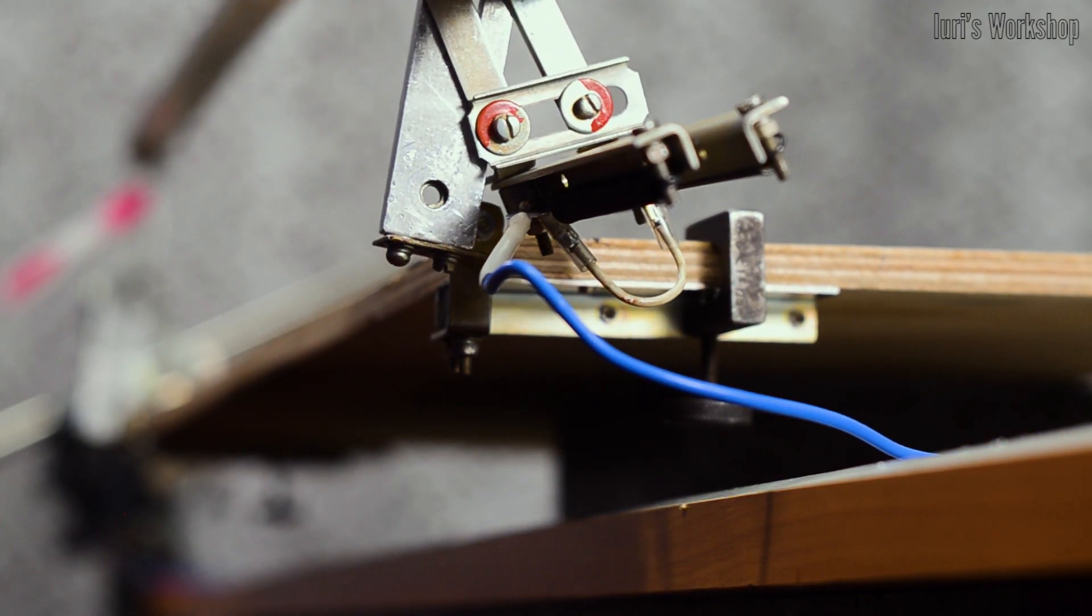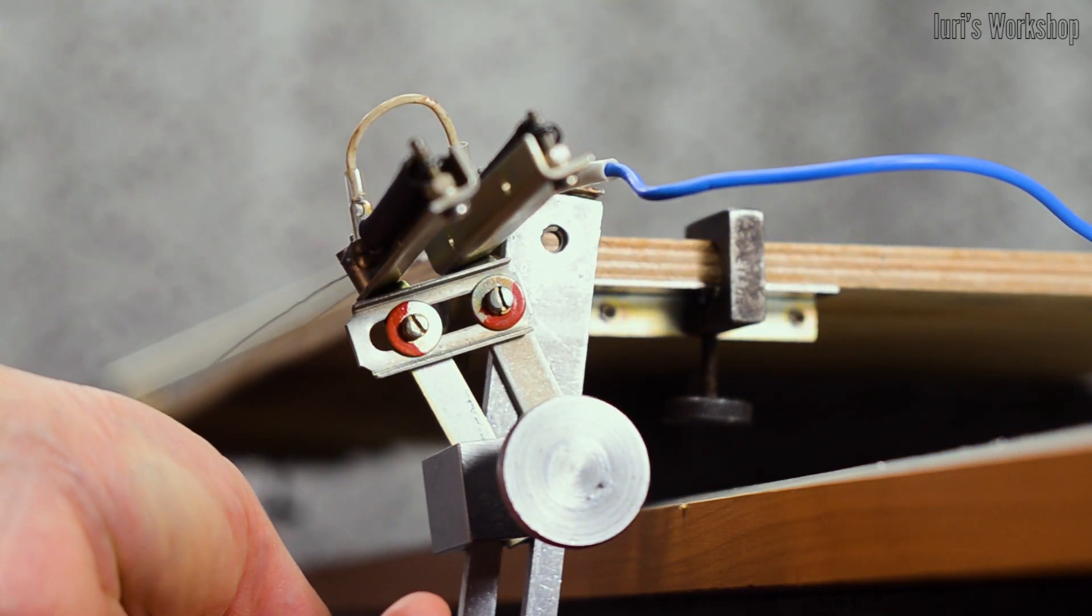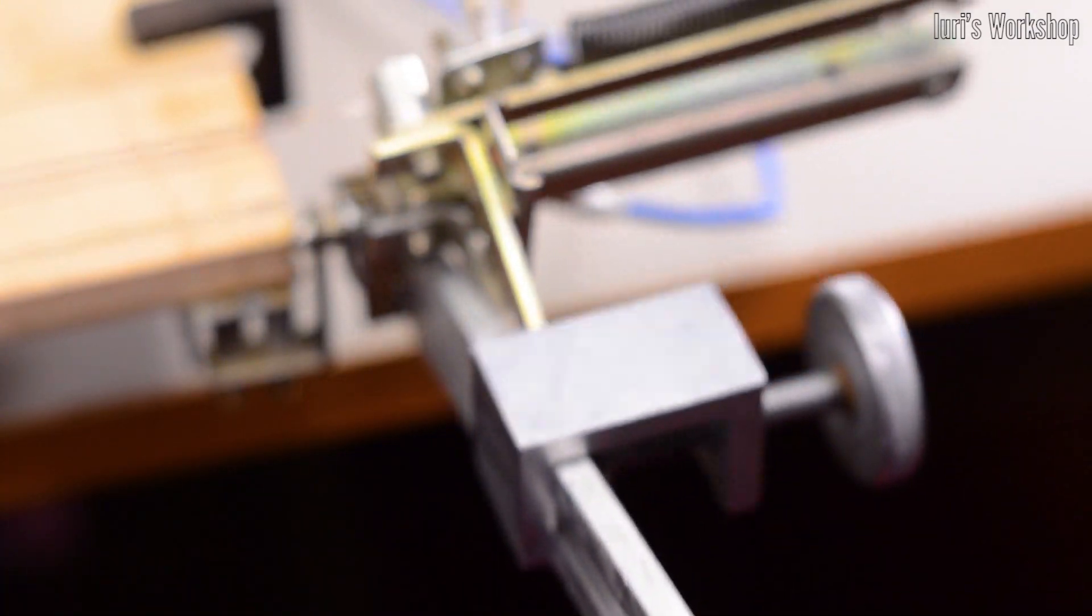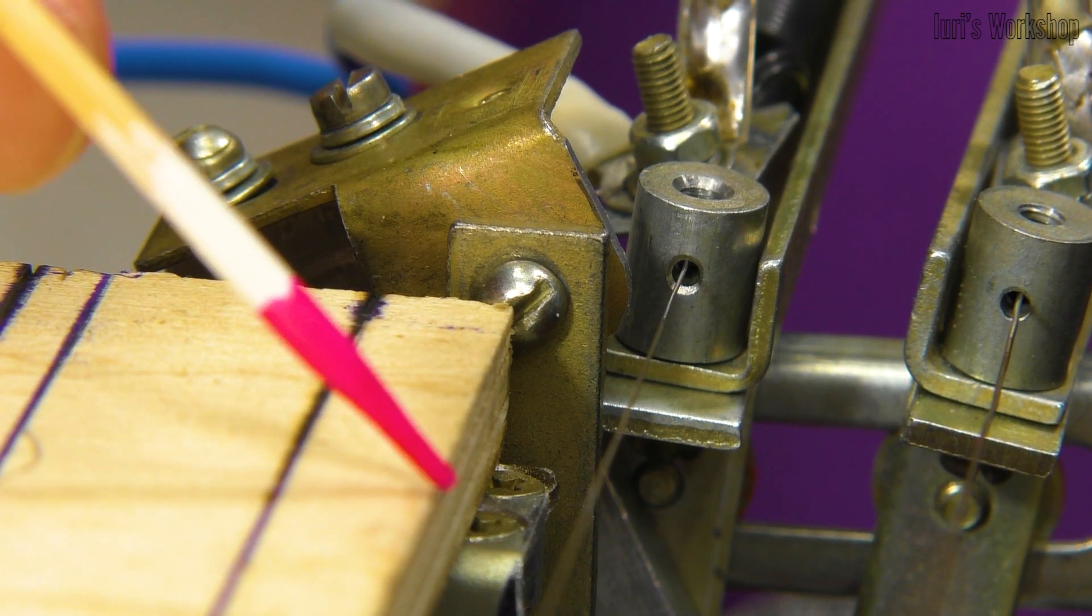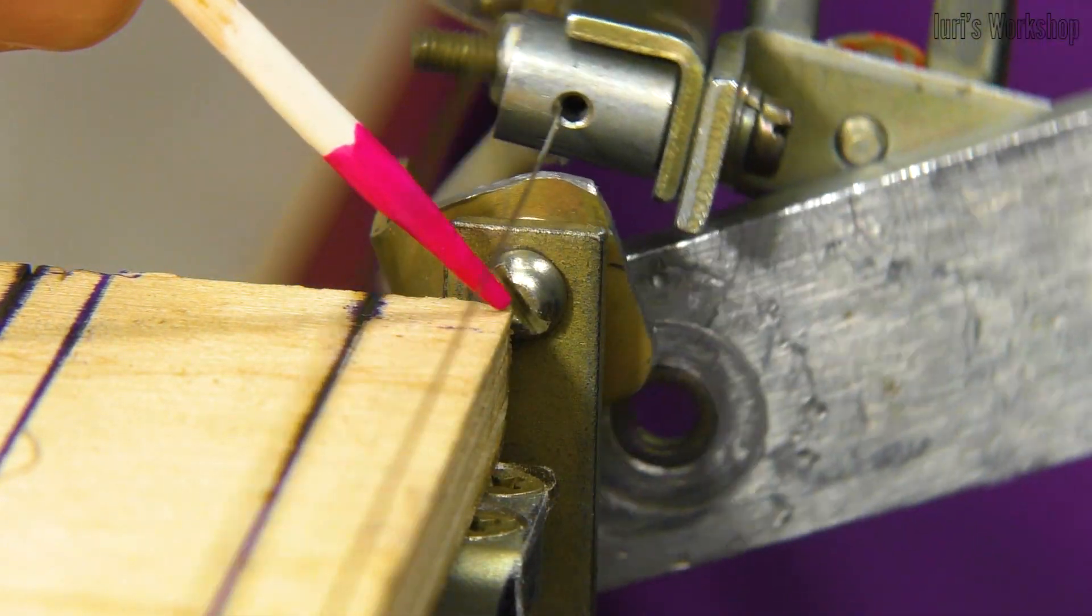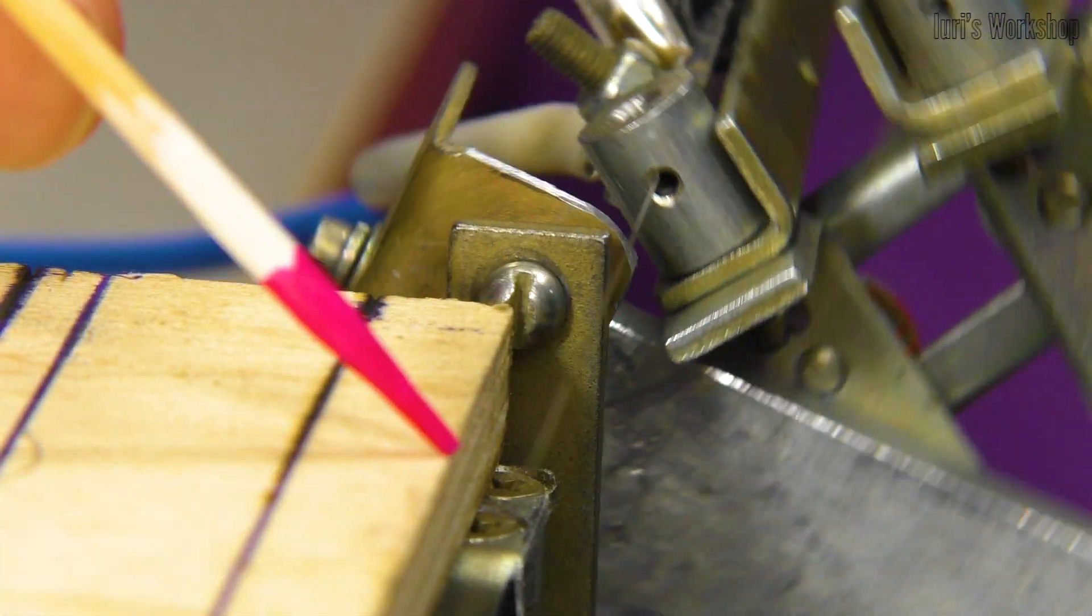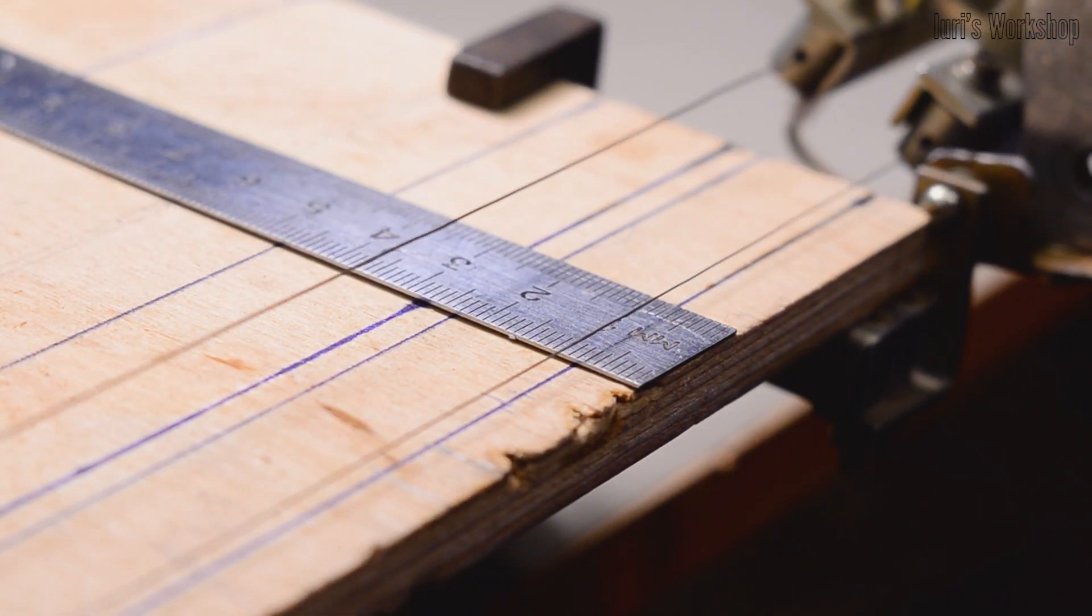To simplify the design of the nichrome string attachment points, the side strips are insulated from each other using a glass fiber laminate plate. Due to the fact that the axis of rotation of the nichrome strings coincides with the edge of the bed plate, the task of adjusting the position of each string is simplified.